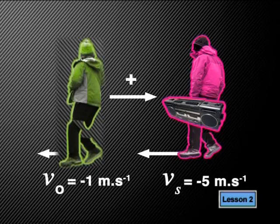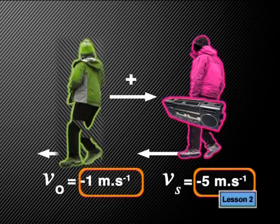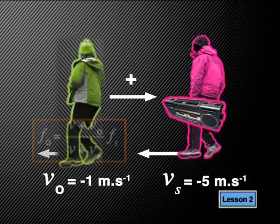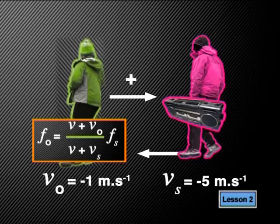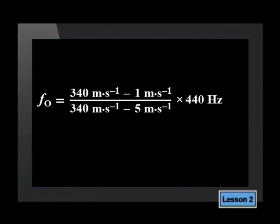Now, what if Tabo is walking to the left with a velocity of 5 meters per second, and Kristen is also walking to the left but with a velocity of 1 meter per second, in front of Tabo? Notice the line from the observer to the source is still to the right, so all velocities to the right are positive and all velocities to the left are negative. So both VS and VO are negative. Substituting these values into the equation, we find that FO has still increased but is now 445 Hz instead of 448 Hz.